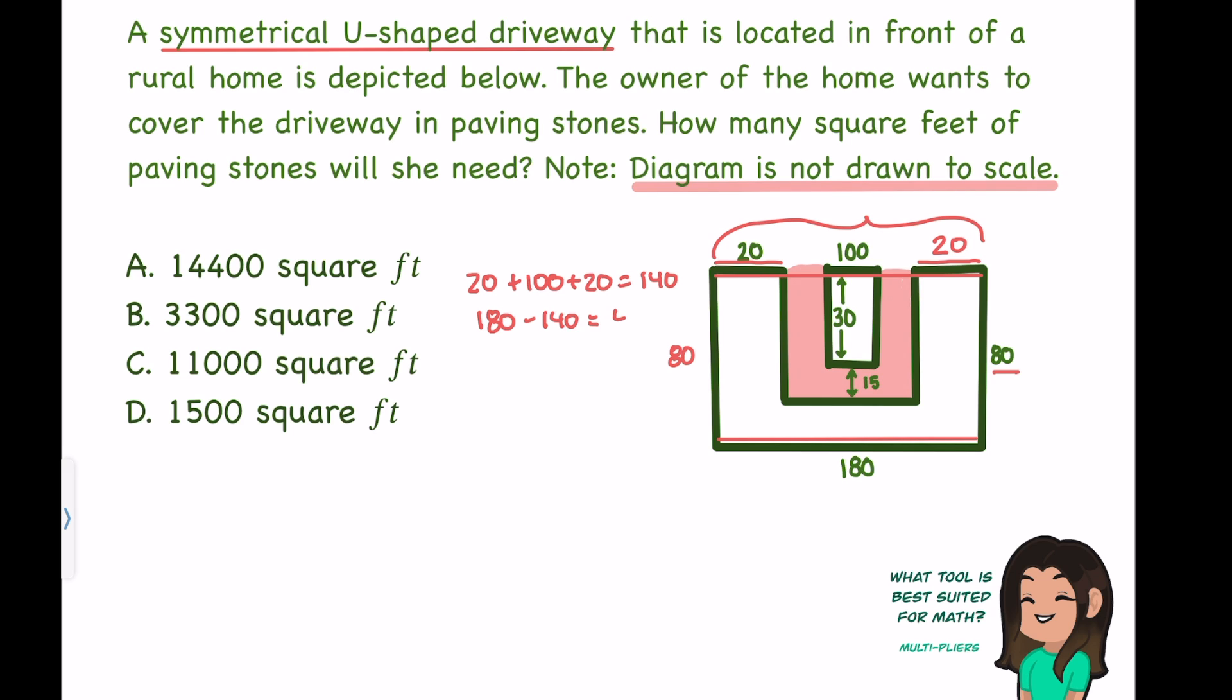180 minus 140 gives us 40. So I'm missing 40 feet on that top length. That word symmetrical comes into play again because that means that 40 feet is being evenly divided amongst both sides of that 100. 40 divided by 2 gives me 20. So each side of this will be 20. 20 plus 20 plus 100 plus 20 plus 20 gives me back that 180. I'm good to go. I did my first step.